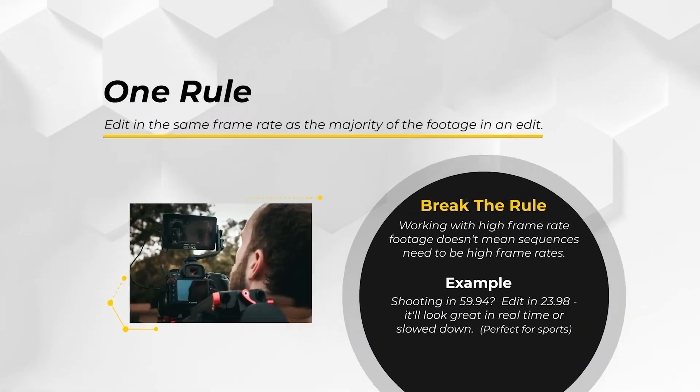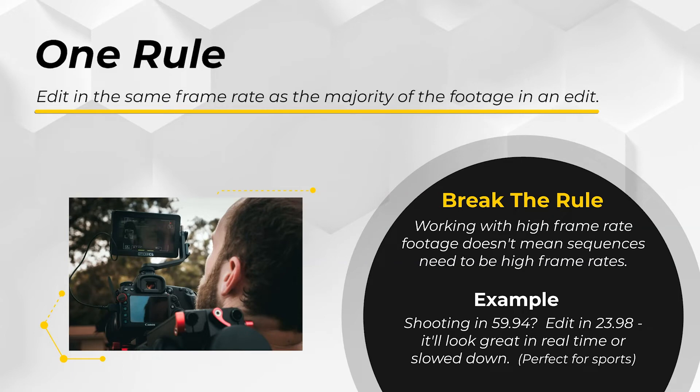If you don't know what frame rate to use on a project, a good place to start is to edit in the same frame rate that the majority of your footage was shot in. Where that doesn't apply is when your footage was shot at high frame rates like 59.94, 120, 240, and so on. High frame rate footage, if it wasn't conformed in camera, needs to be conformed before editorial starts. Conforming footage is a way of taking one type of video and manipulating it so that it behaves like another type of video.